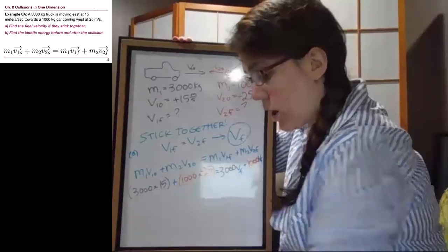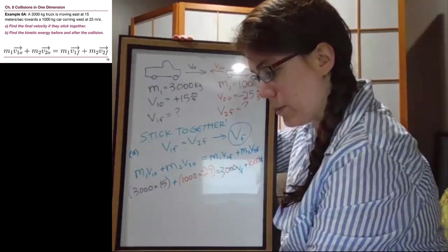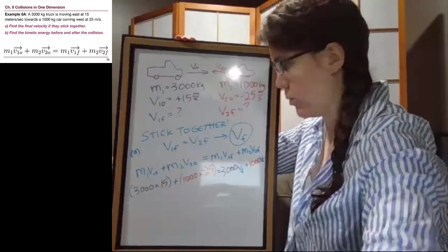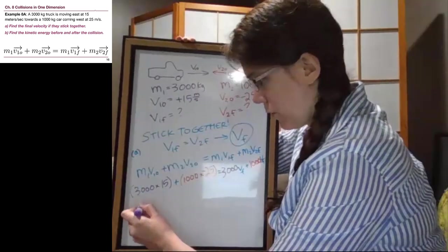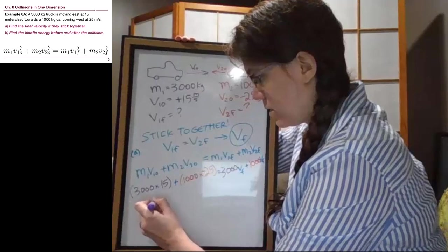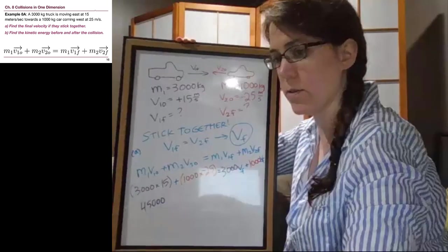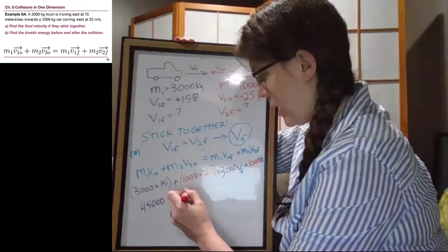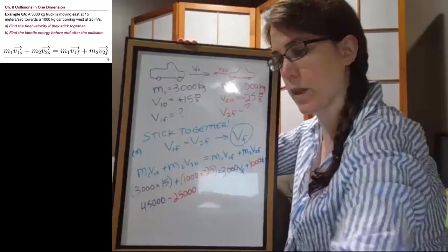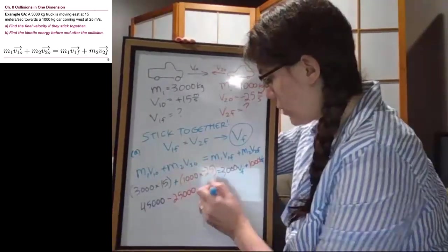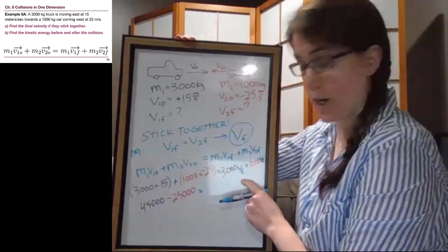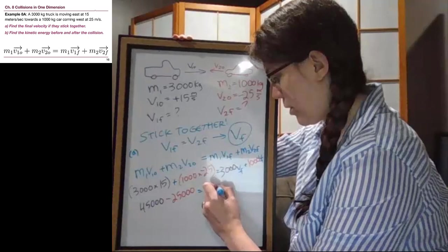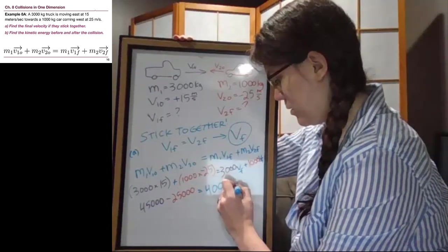Okay, so on the left, we'll put both terms first. So 45,000 positive, and we subtract off 25,000, and on the right side, 3,000 V final plus 1,000 V final means we end up with 4,000 V final.